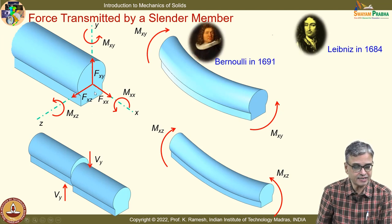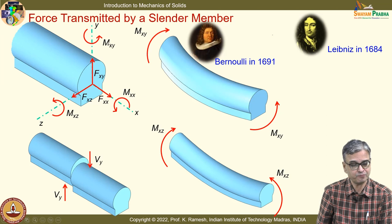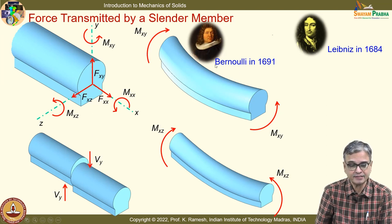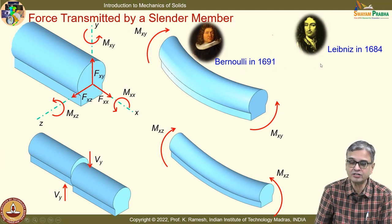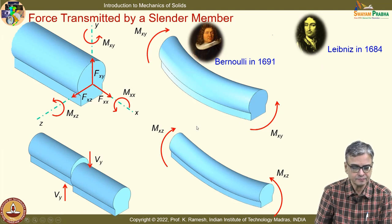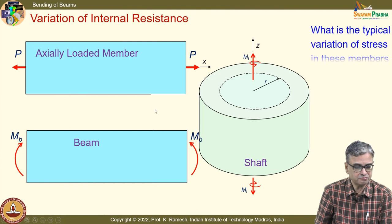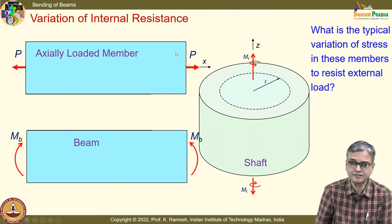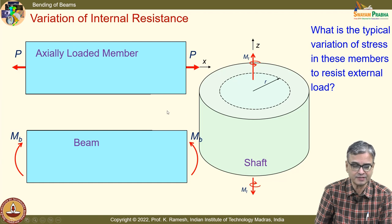To recognize that a slender member will transmit force and a moment — even though they had not considered all six components — the basic idea goes to the credit of Bernoulli and Leibniz, around 1700. We asked the question: what is the typical variation of stress in these members?